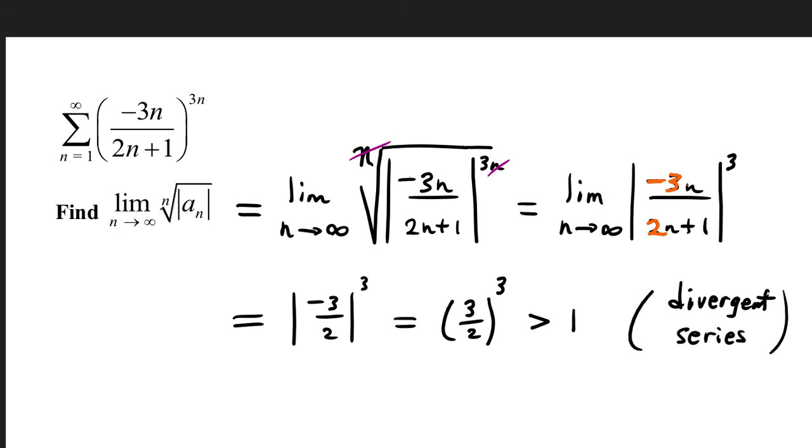As n gets really large, and don't forget that power of 3 that did not get canceled, only the n's. We have matching powers of n, they're both n to the first, so we take the lead coefficients. That's negative 3 halves. Absolute value is positive 3 halves. When we cube, we get something larger than 1. That tells us we have a divergent series by the root test.